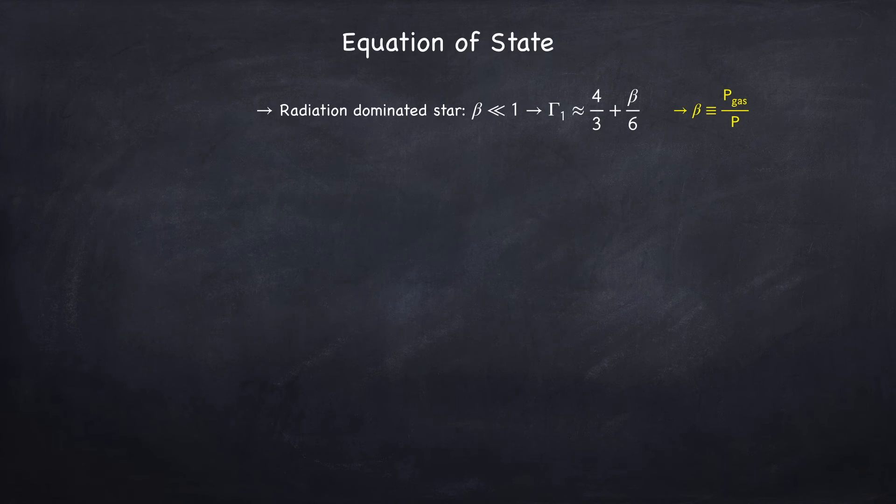In Stellar Physics 2c, we found that the adiabatic index, gamma 1, for radiation-dominated environment is a little bit over four-thirds. Since these are radiation-dominated stars, they will be radiating at the Eddington luminosity, which I covered in Stellar Physics 1c, and is the luminosity a star would have if it were entirely supported by radiation pressure.